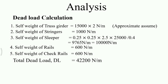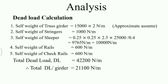The total dead load is 42,200 N/m. Note that the self-weight of the truss girder was multiplied by two, while the remaining items — stringers, sleepers, rails, and check rails — are given per track and are not multiplied by two. Since there are two girders under one track, we divide by two to get the dead load on each girder. Therefore, total dead load per girder is 21,100 N/m, or 21.1 kN/m. This value will be used when analyzing the truss members.